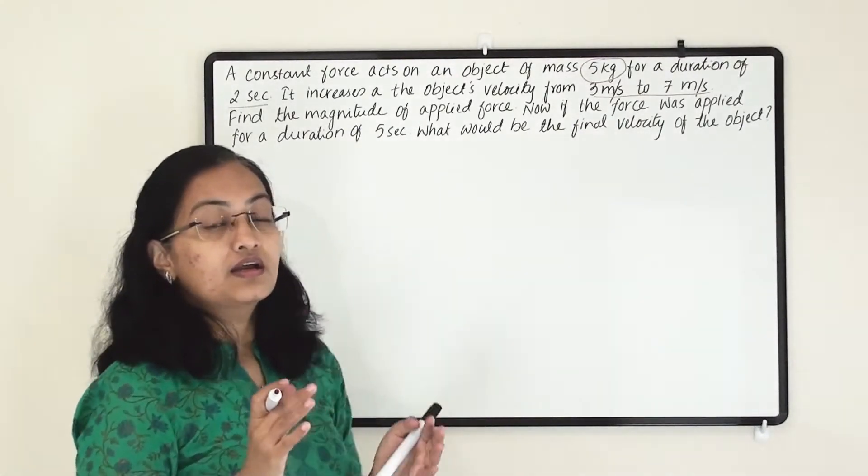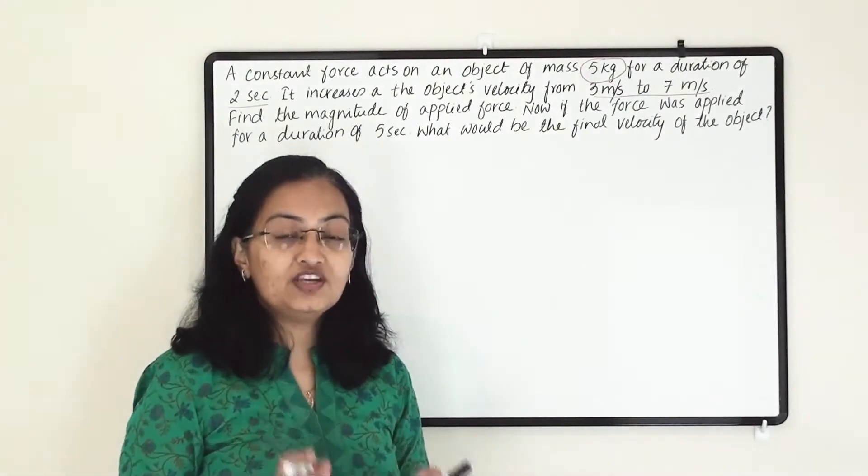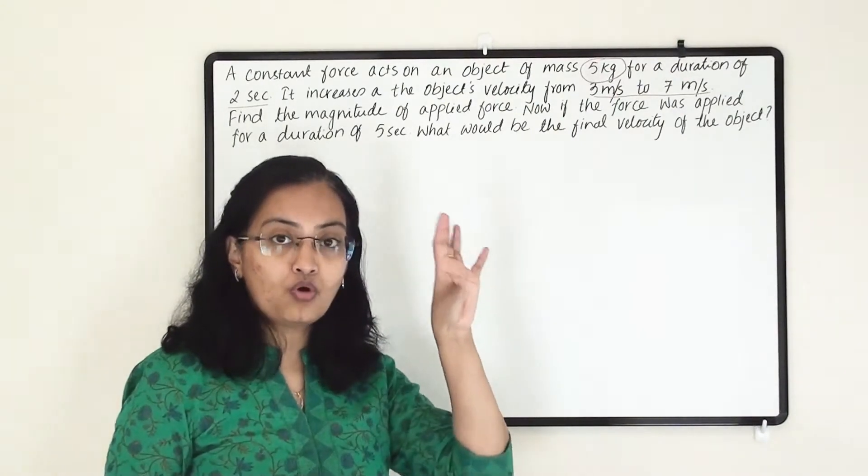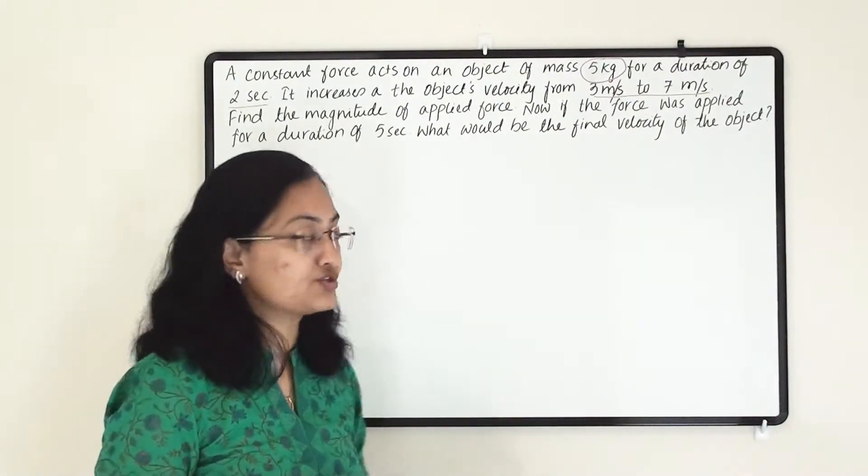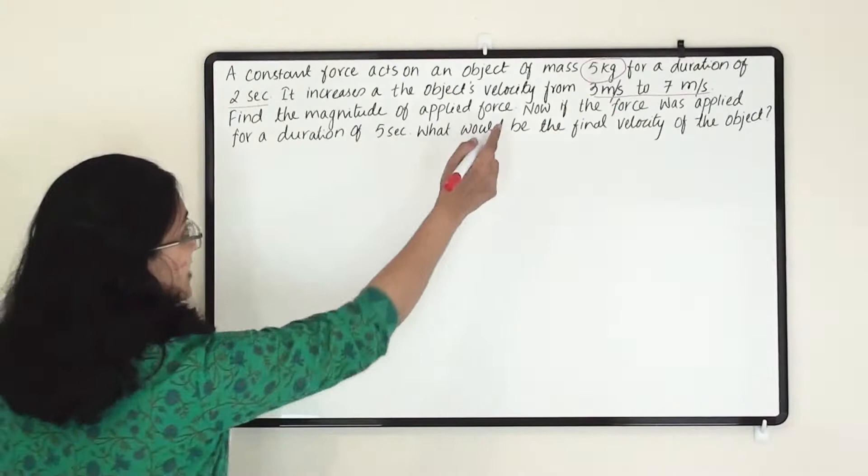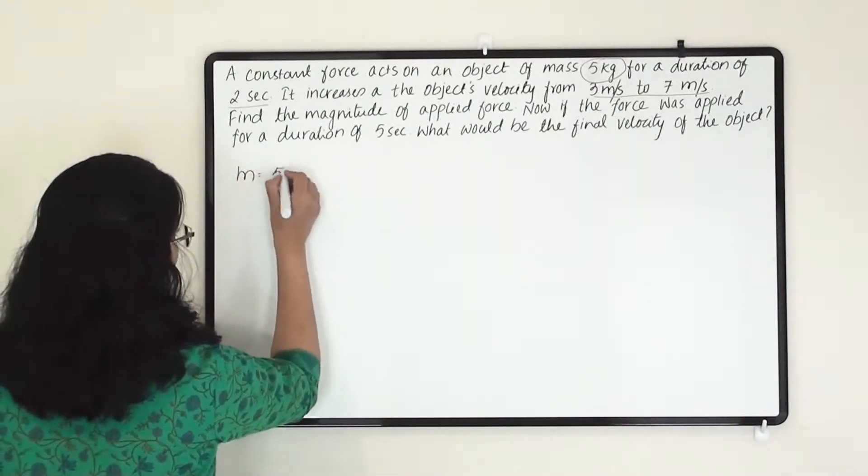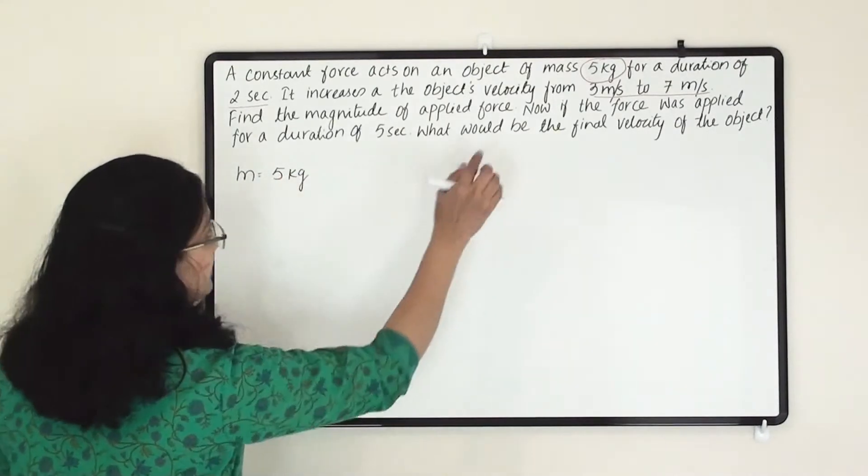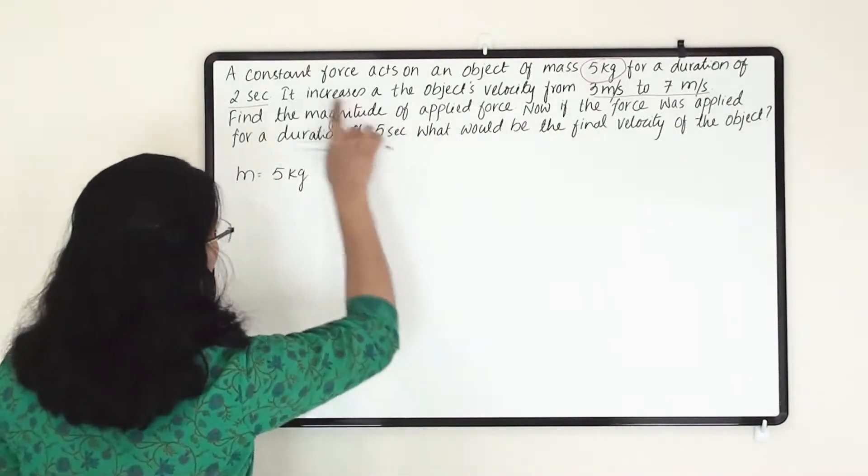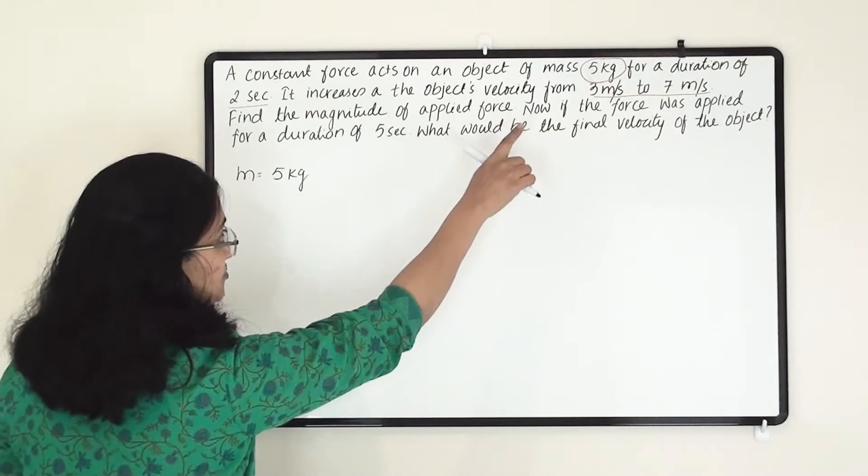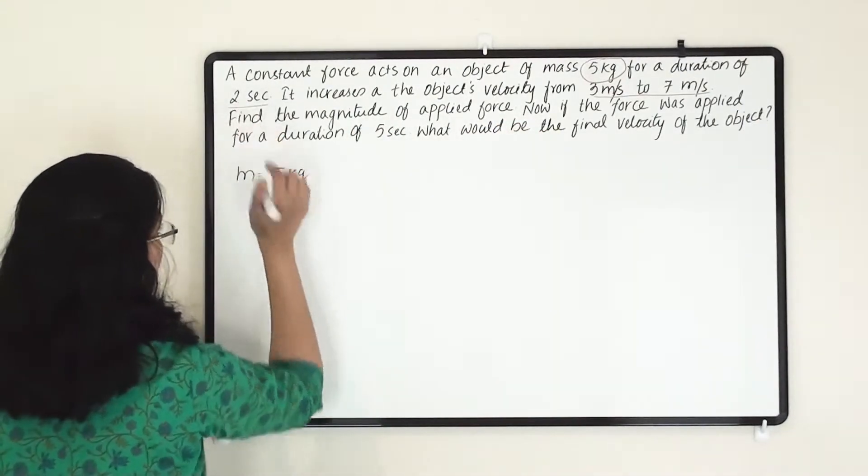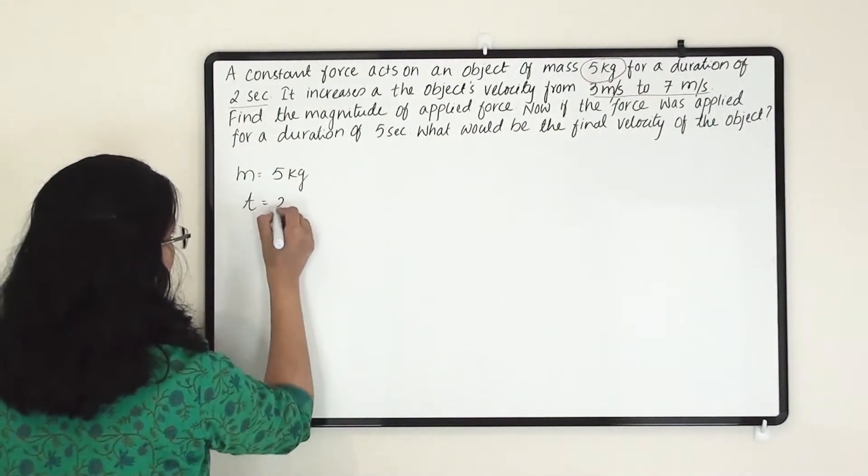Whenever you are solving any numerical, first note down all the information given in the question. First, 5 kg is the mass of an object. So here I am writing m equals to 5 kg. Then for a duration, force is acting on this object for this much time. So our t here is 2 seconds.